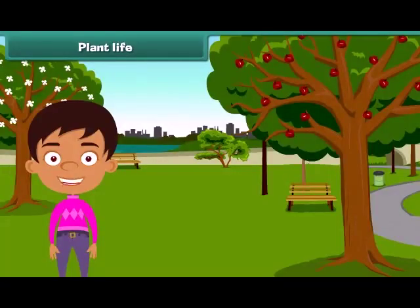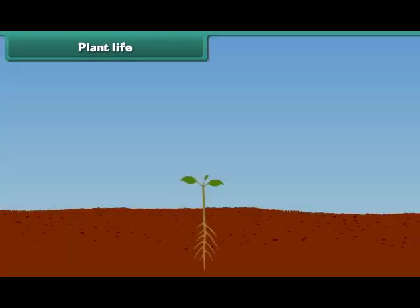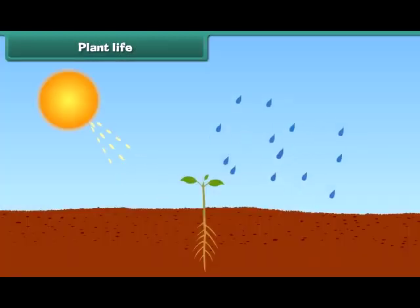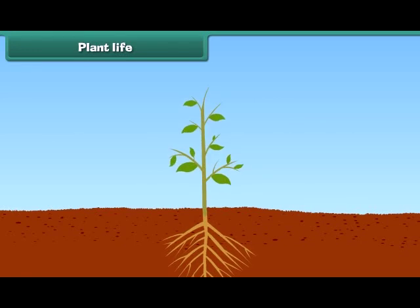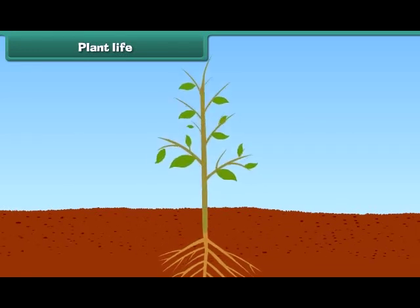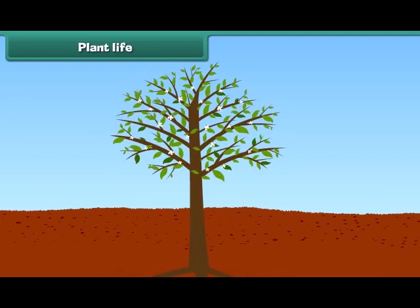Hello, friends. I am Sam. Do you know that plants are also our friends as they give us food and many other useful things? Besides this, they also give us shade. They are also living like us. They need their own food and water to live and grow. They also have the ability to grow and become tall like us.